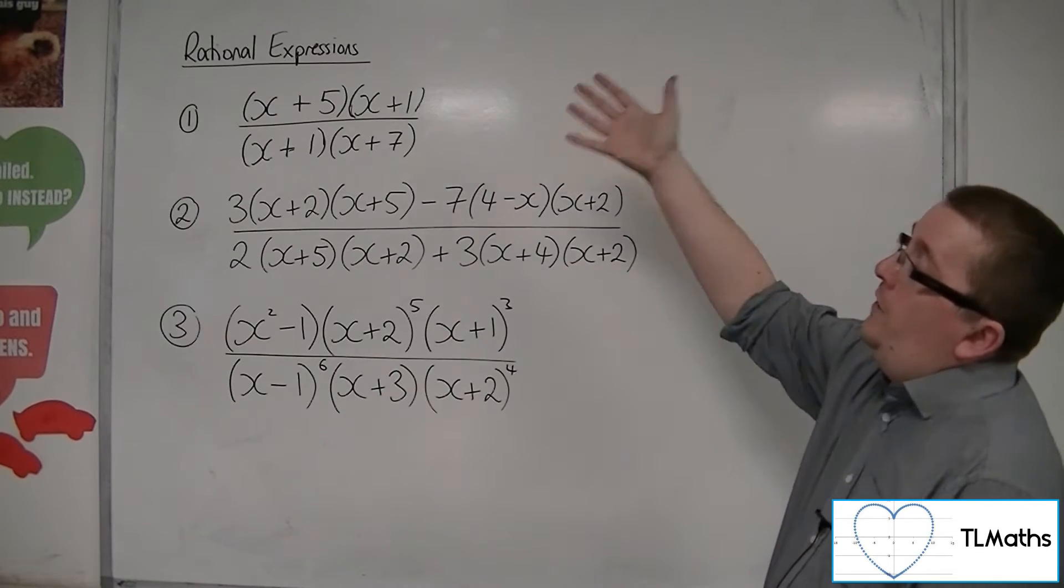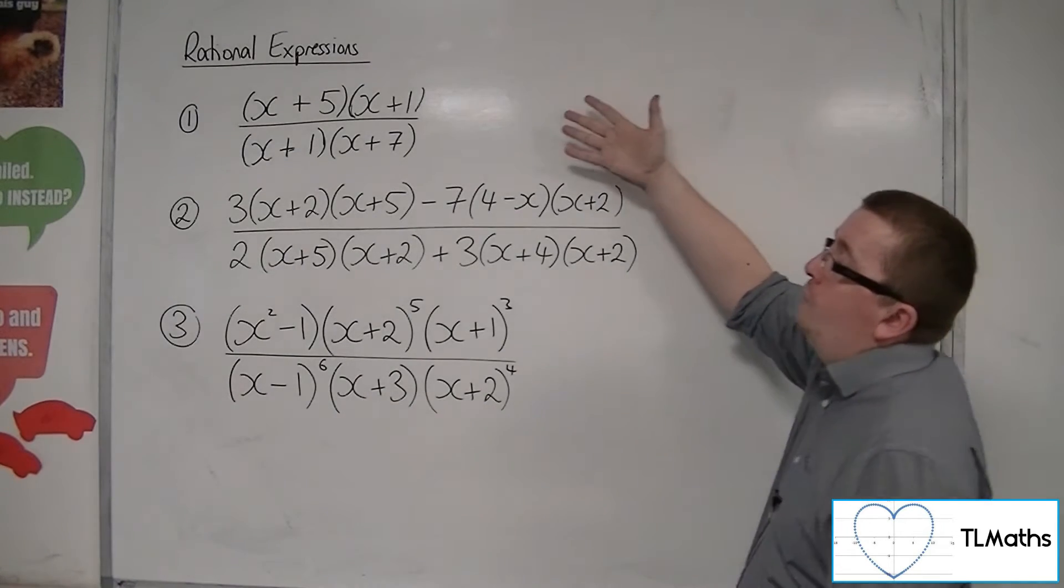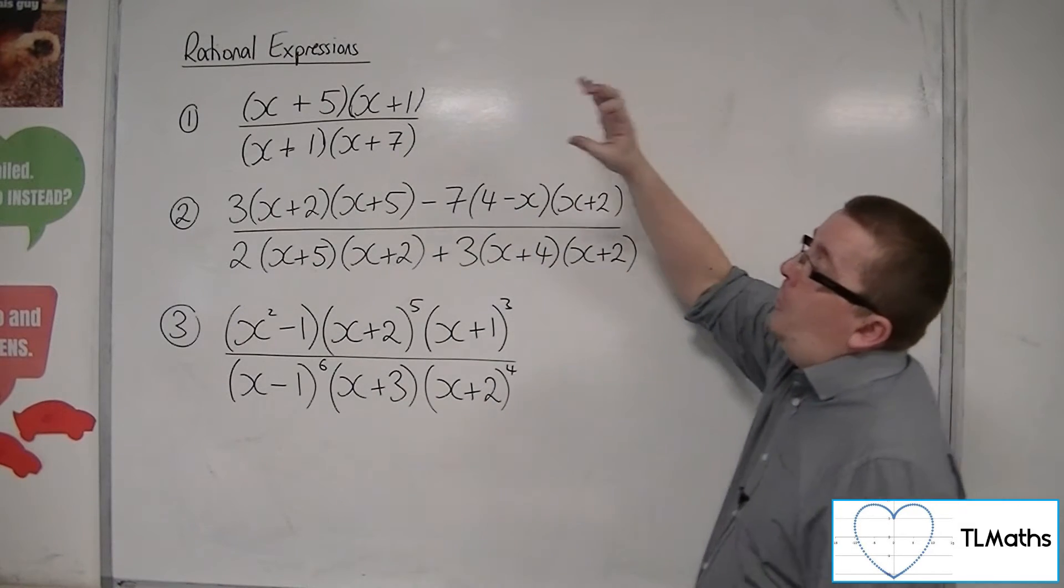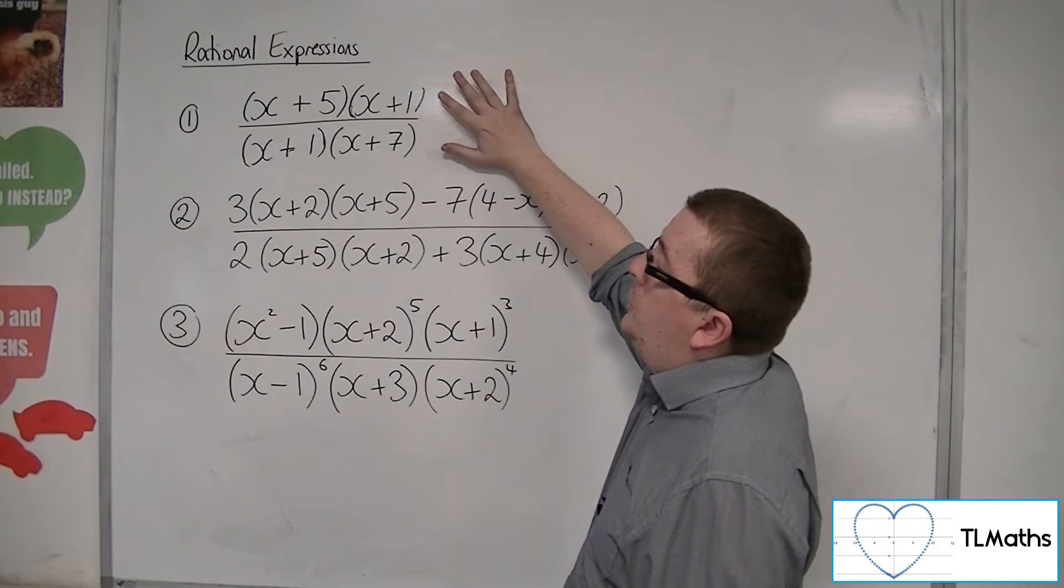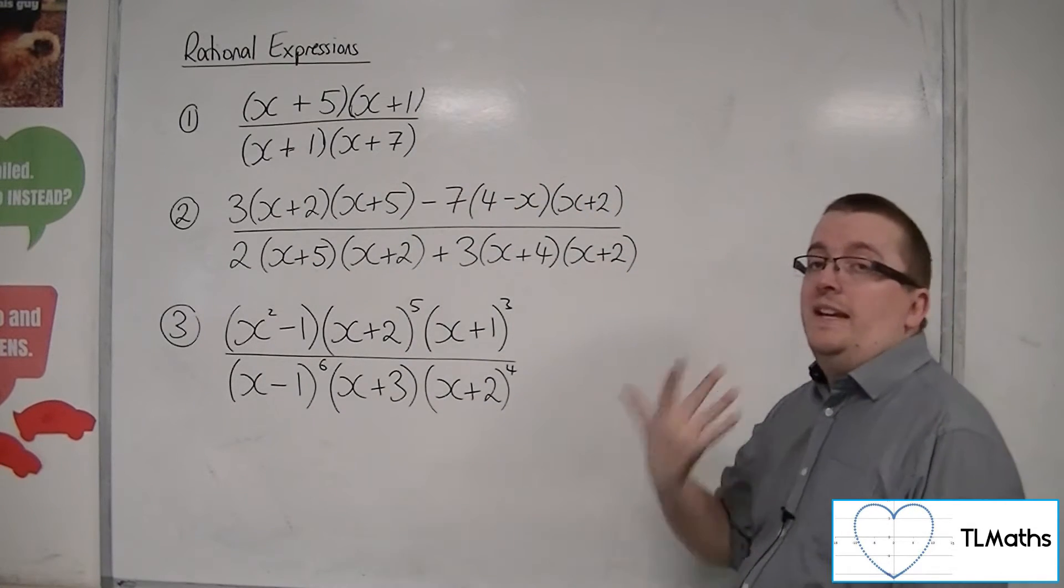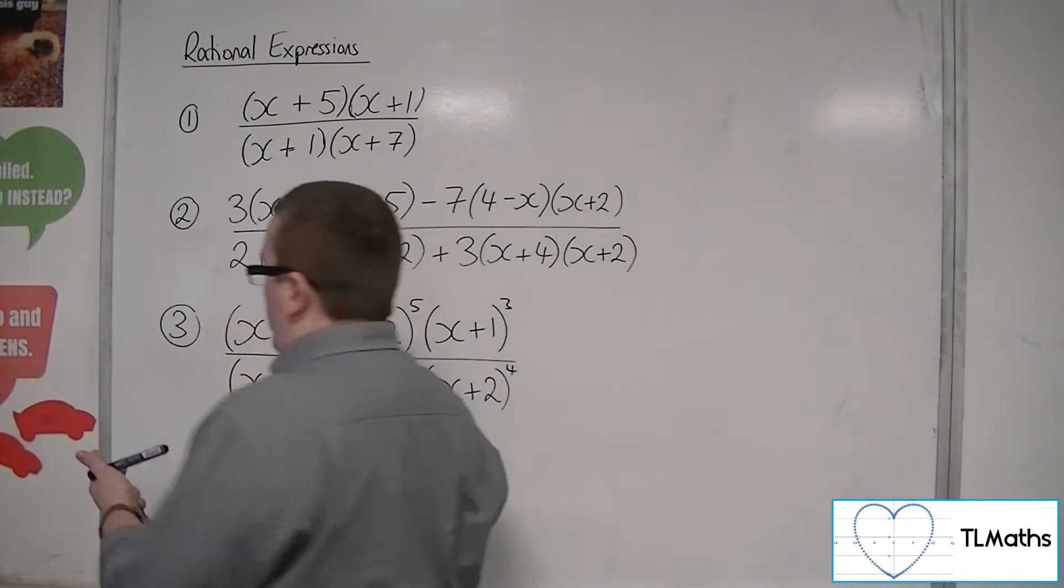So for this first one, we've got x plus 5, x plus 1, over x plus 1, x plus 7. The fact is that if I can spot that there is a common factor to the numerator and denominator, which there is, this x plus 1, that means I can cancel through by a common factor.